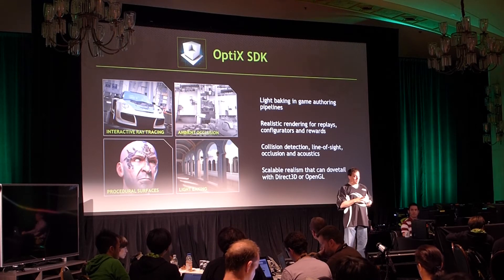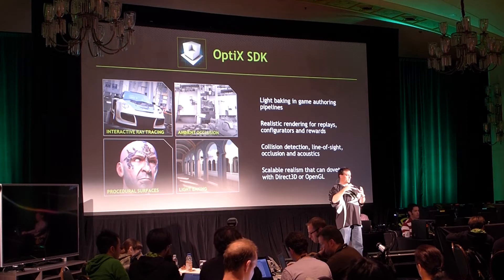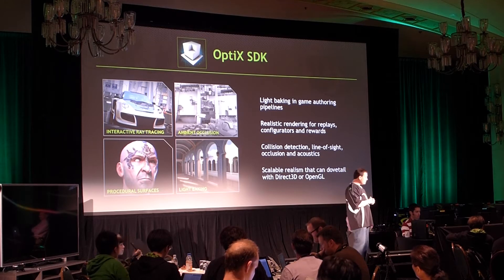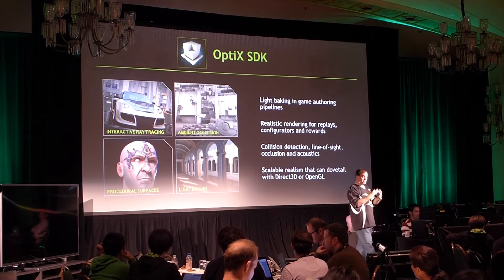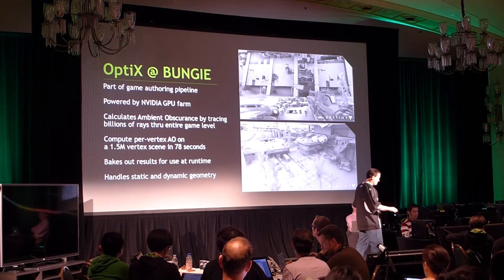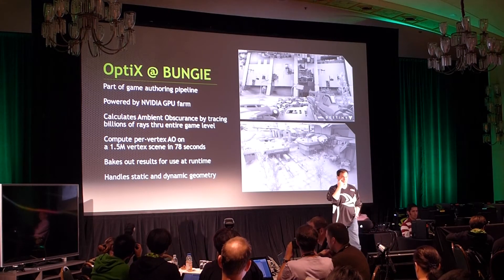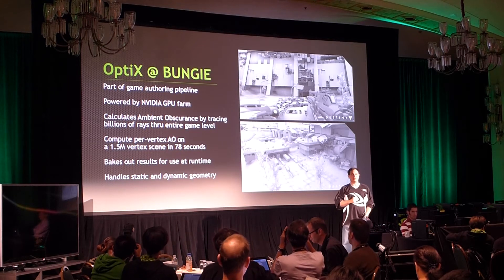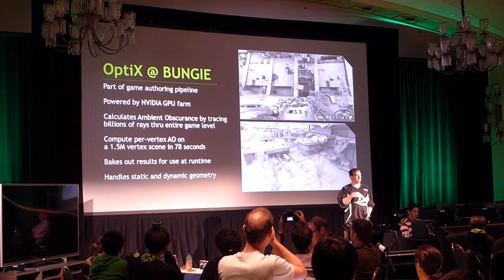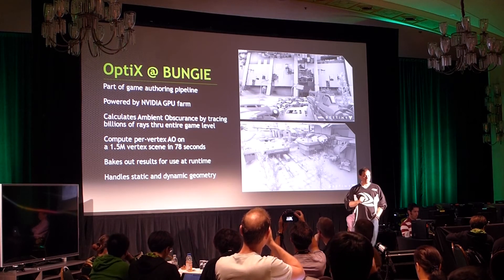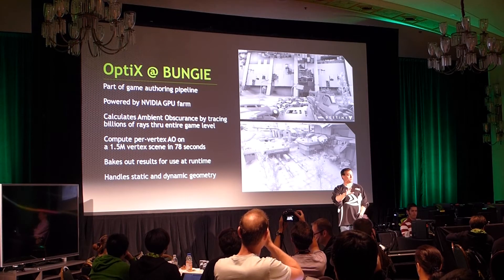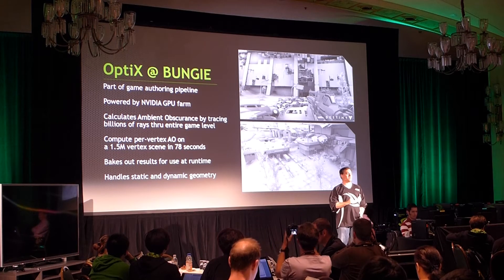OptiX is used as part of a lot of game developers' core pipeline. It can be used as a building block to help produce great games. The folks at Bungie — working on Destiny — are in fact using OptiX to author content for Destiny. They're building ambient obscurance, a form of ambient occlusion, basically doing global illumination pre-calculation for Destiny using OptiX on NVIDIA GPU farms.